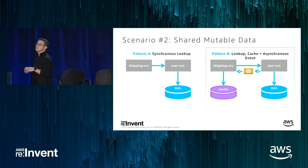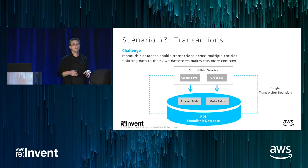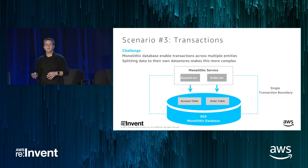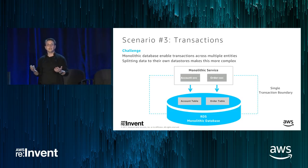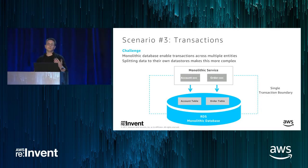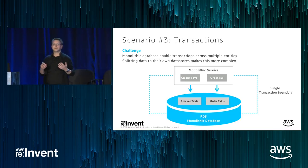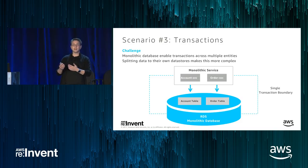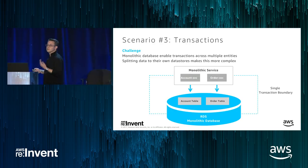Transactions say: these things either all happen together, or none of them happen at all. In a database context, they allow you to update multiple tables, knowing that if one update fails, the transaction rolls everything back, leaving data in a consistent state. In an ordering system where placing an order requires updating an orders table and debiting an account table — in a monolithic database with a single transaction boundary, the transaction handles rollback. When we tease apart our database, we lose that single transaction boundary.